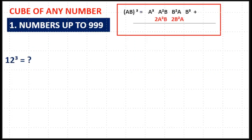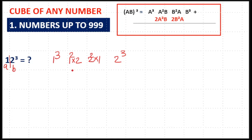Here is a 2-digit number: 12 cube. To find 12 cube, split the number as 1 and 2, so a = 1 and b = 2. First take the cube of 1 (that is 1 cube), then take the cube of 2 (2 cube), and write them on the LHS and RHS. In the middle you have 2 terms: take the square of 1 and multiply it with 2 (1² × 2), then take the square of 2 and multiply it with 1 (2² × 1). Then take double the middle terms: 2 × (1² × 2) and 2 × (2² × 1). Then add all these terms together.